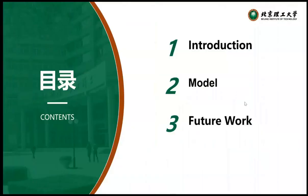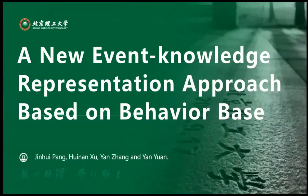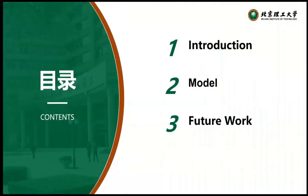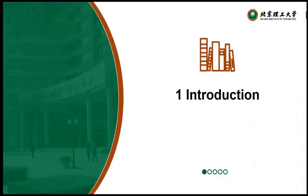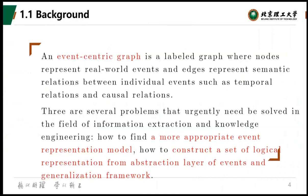The title of this paper is a new event knowledge representation approach based on behavior bits. An event-centric graph is a labeled graph where nodes represent real-world events and edges represent semantic relations.